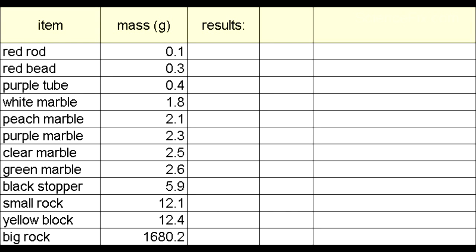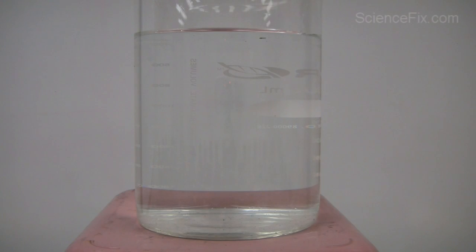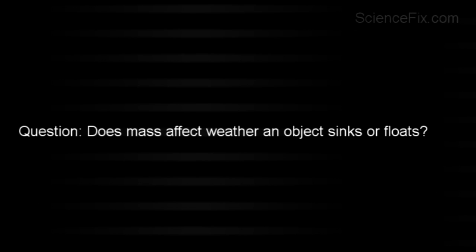Here's a list of items and their masses, and they're going to be placed into this beaker of water from the least massive object to the most massive object. And the big question we're going to ask is, does mass affect whether an object sinks or floats?